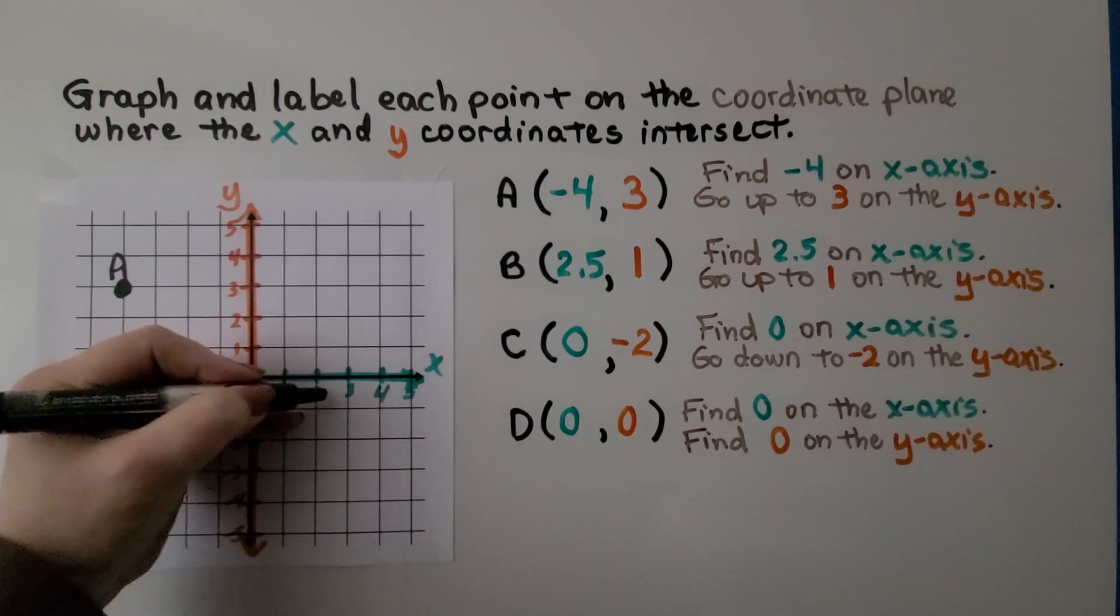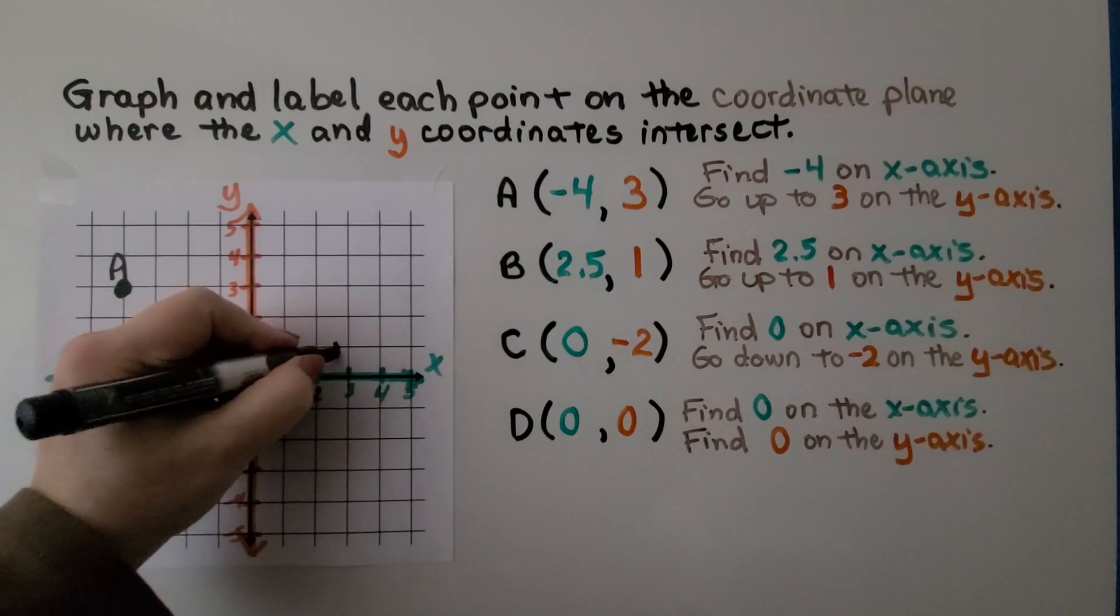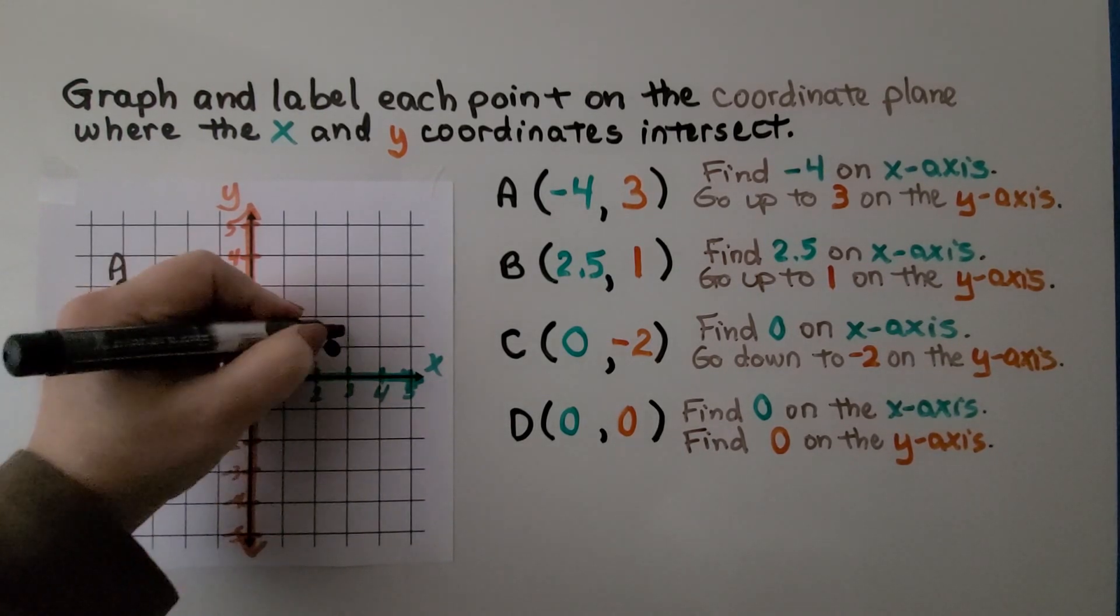So we're going to go to two and a half, which is in between the two and three. And then we're going to go to one. So that would be right here. We can label that B.